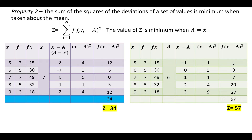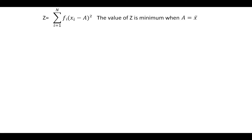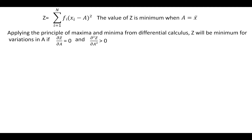Now let us see the theoretical proof. We have to prove that the value of z is minimum when a is equal to the arithmetic mean, that is x bar. Applying the principle of maxima and minima, z will be minimum if dou z by dou a is equal to 0, and dou square z by dou a square is greater than 0. Let us see the first part, that is dou z by dou a equals 0.